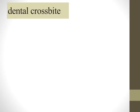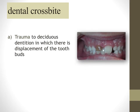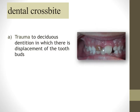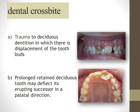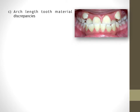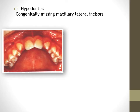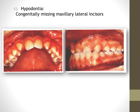Dental crossbite is comparatively easier to treat. It can result from trauma to the deciduous dentition displacing the permanent tooth bud, causing it to erupt palatally in crossbite. It can also be due to a prolonged retained deciduous tooth deflecting the erupting permanent tooth, or from severe arch-length tooth-material discrepancy, supernumerary teeth in the lower arch pushing it forward, or conversely, fewer teeth in the upper arch causing it to collapse inside the lower.